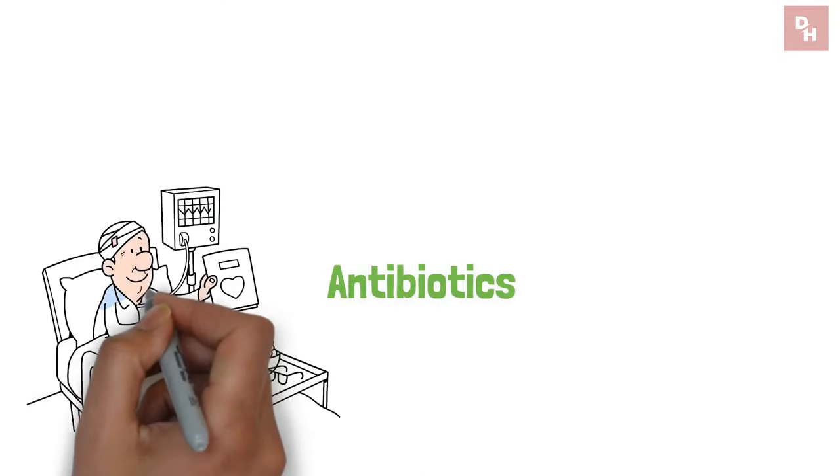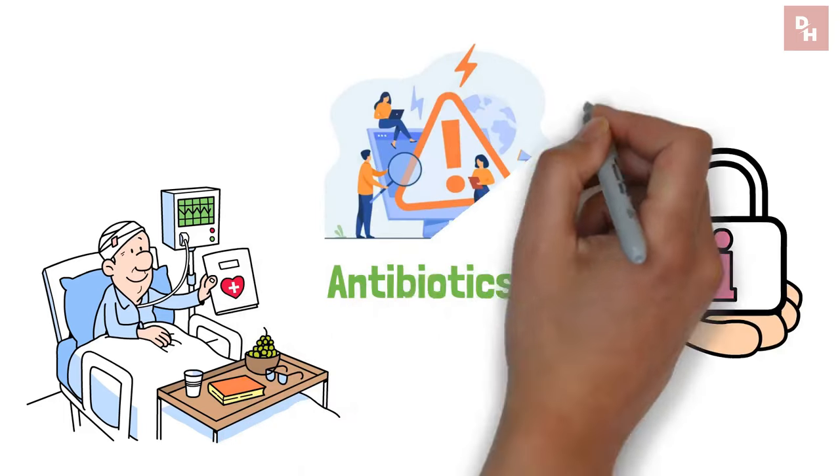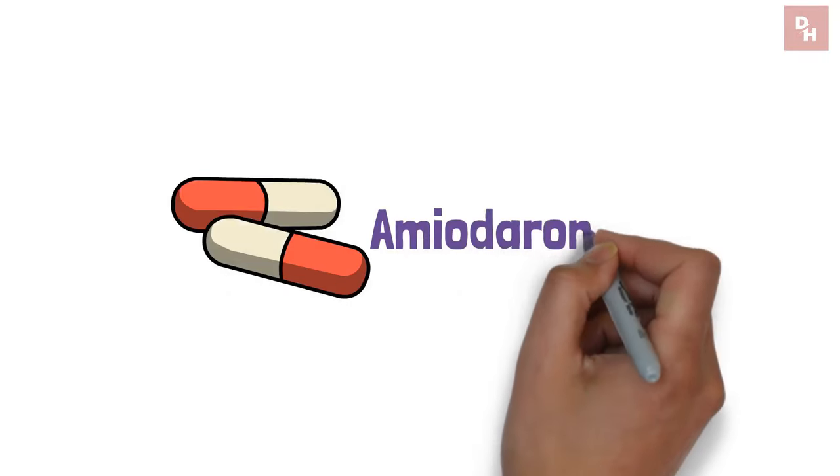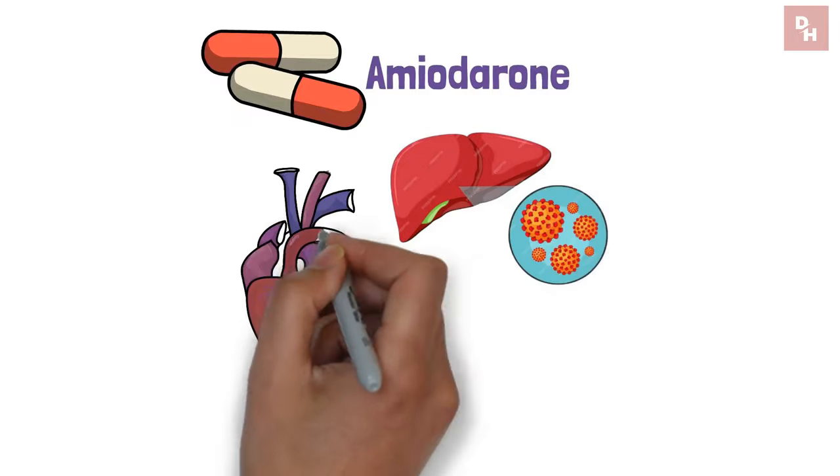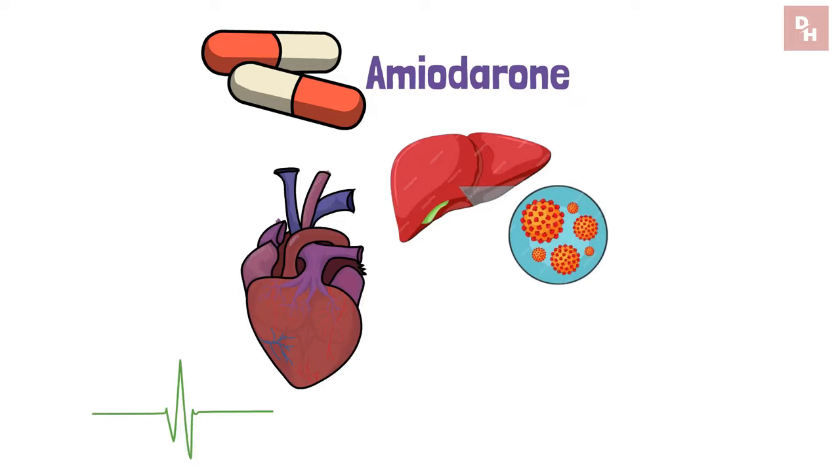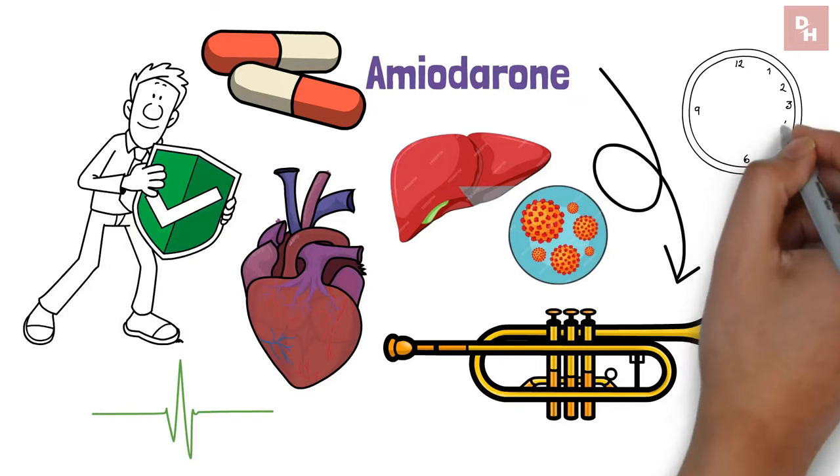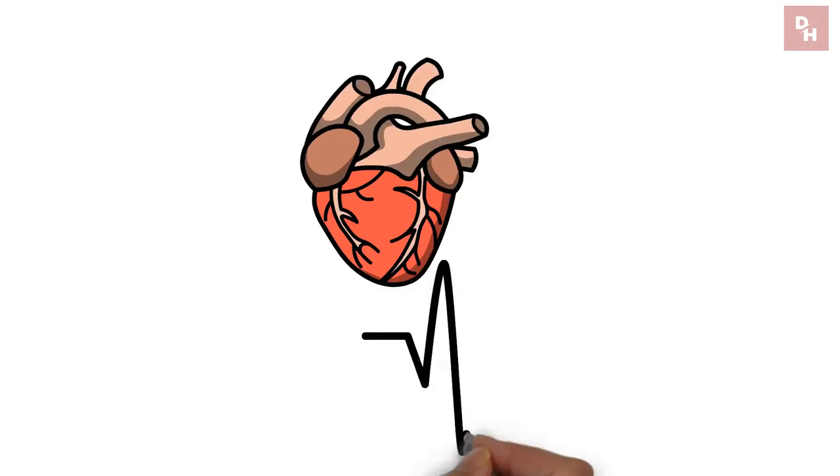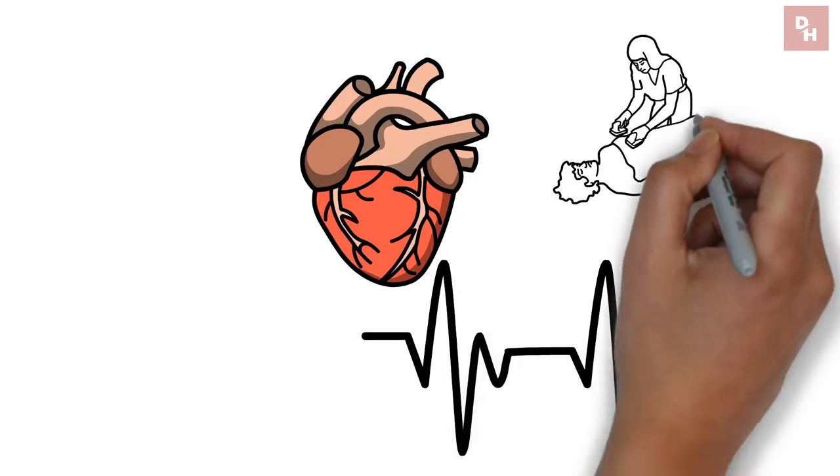Antibiotics save lives, yet caution is paramount. Up next, a common remedy with overlooked risks. Pill number four, Amiodarone, a heart helper with a hepatic hitch. When it comes to keeping our hearts beating in rhythm, amiodarone is like the conductor of an orchestra, ensuring every section comes in at the right time. It's a go-to for certain heart conditions, stepping in to correct irregular heartbeats that could lead to more serious issues.